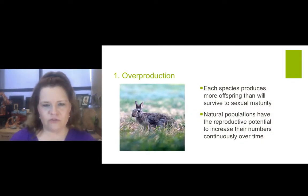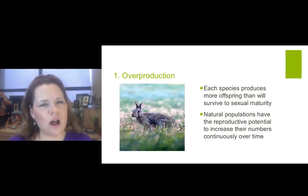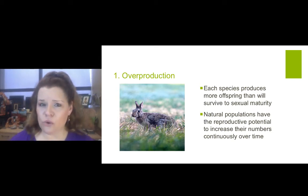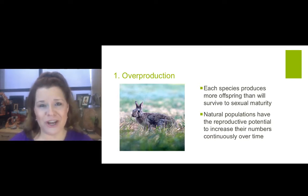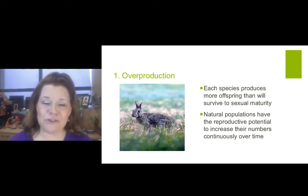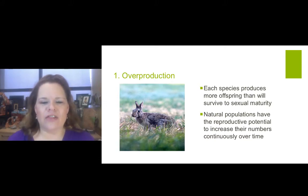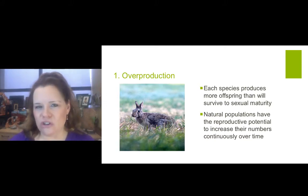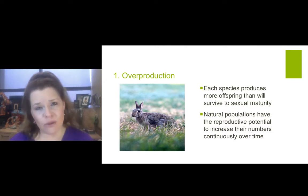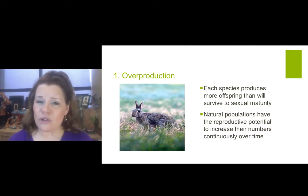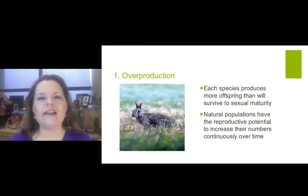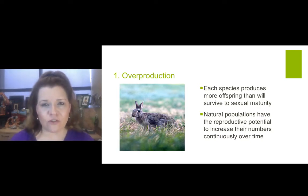Let's look at overproduction first. Each species produces more offspring than will survive to sexual maturity, in hopes that some will be able to reproduce and carry on the species line. Natural populations have the reproductive potential to increase their numbers continuously over time. There's a problem with that though — there becomes an ecological threshold where you have too many species sharing the same resources in the same area, which is impossible to sustain over geologic time.